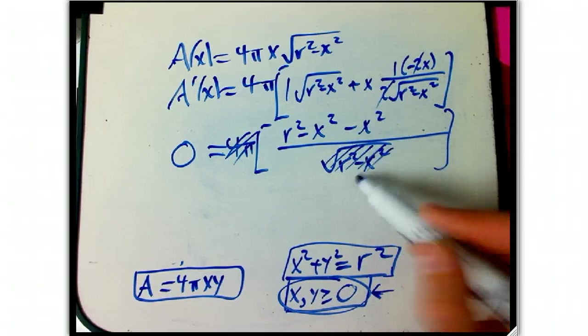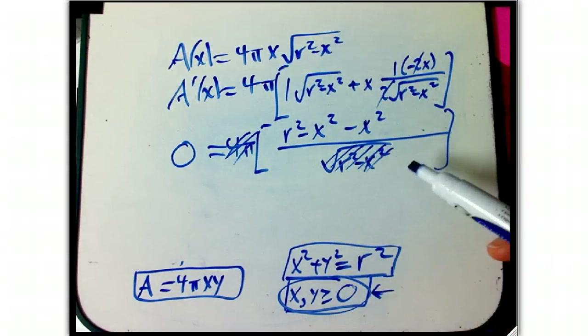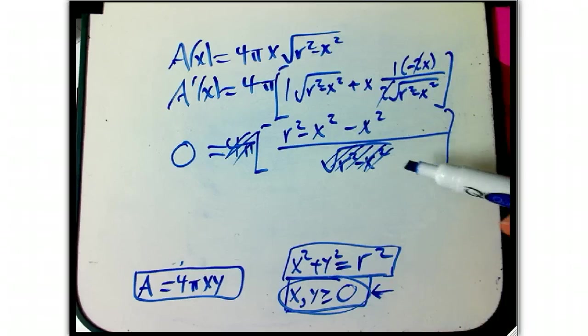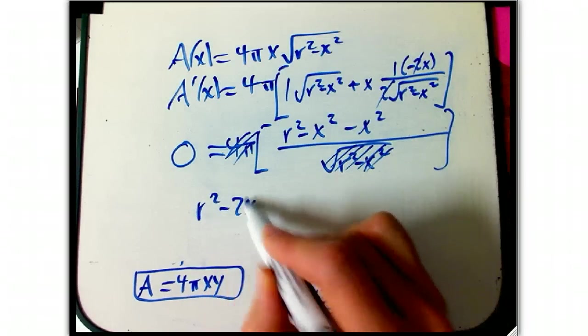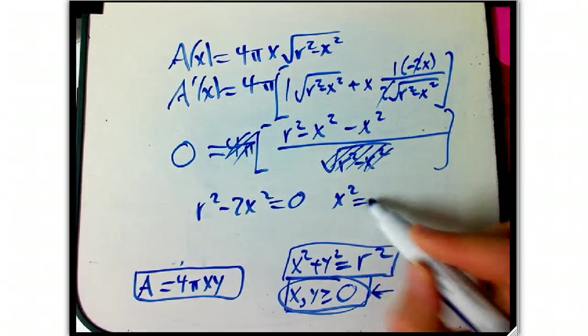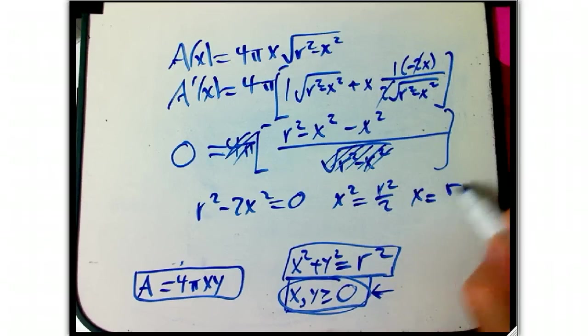So if I'm setting that equal to zero, I can divide by the 4 pi, I can go ahead and multiply by this, and I know that's not zero, because this would all go completely haywire, and I already checked that. By the way, anyway, that was when X was equal to R, and I know that's not interesting. And so it's just R squared minus 2 X squared equals zero, or X squared is R squared over 2.